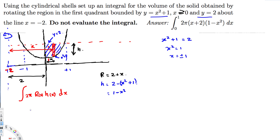Now we plug everything in. The limits of integration go from 0 to 1. Since 2π is a constant, we move it to the front. The integral becomes 2π times the integral from 0 to 1 of (2 + x)(1 - x²) dx. Since they said just to set up the expression and not evaluate it, that is the answer. I hope you find this helpful — see you next time!